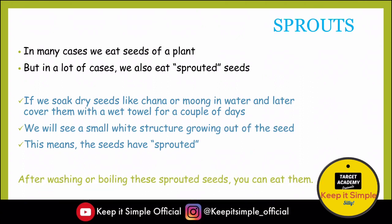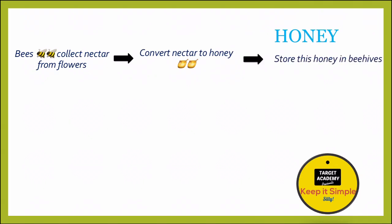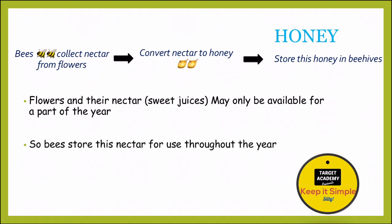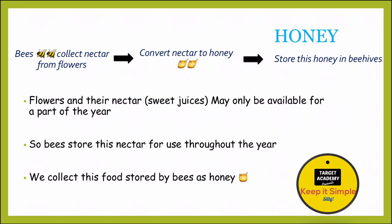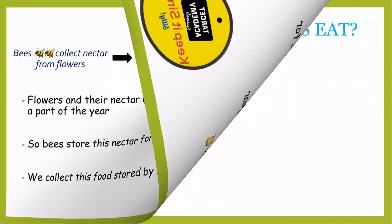Another food item is honey. Honeybees collect nectar from flowers, which they convert into honey and store in beehives. Nectar is a sweet juice extracted from flowers. Bees store this nectar for use throughout the year, and we collect it to use as honey. So we have read about plants as a food source.